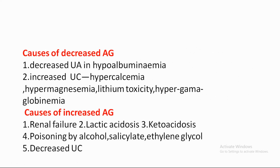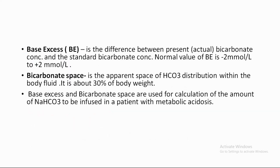When there is renal failure — meaning the kidneys are not functioning — toxic products accumulate in the body that the kidneys would normally eliminate. These products contribute to the increased anion gap. This is an important concept connecting renal failure to High Anion Gap Metabolic Acidosis.